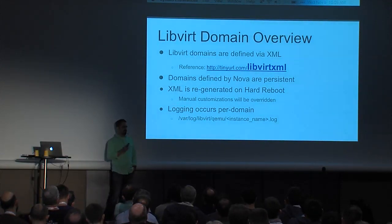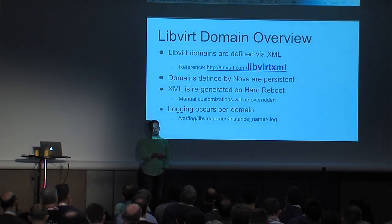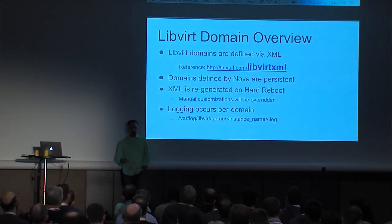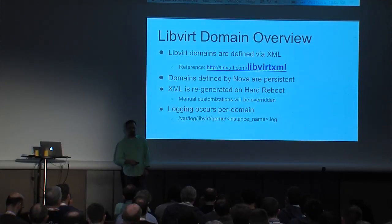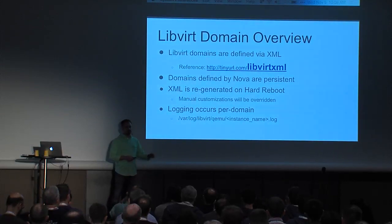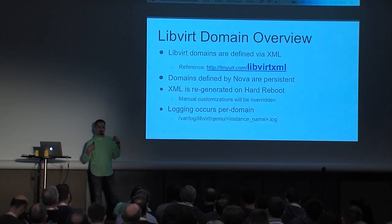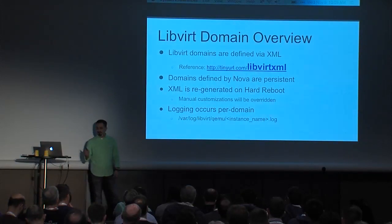An important set of logs frequently overlooked are the LibVirt logs. Generally you'll get a response back to Nova's logs reporting what error LibVirt happened to report, but sometimes you do actually need to go look at the LibVirt log. This is the default location on Ubuntu. If you go look in there, there's an instance name log for each and every domain that's ever run on that hypervisor. Things are not necessarily cleaned up, but you have all the data there for troubleshooting — including what QEMU responded back with.